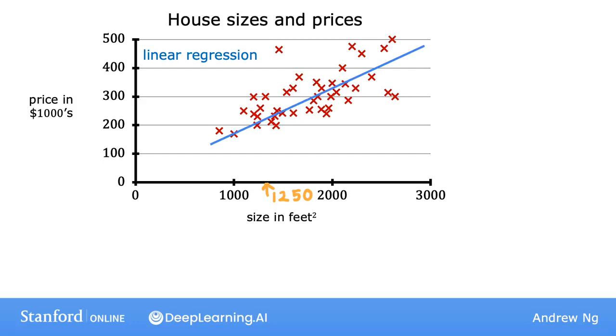And based on this straight line fit to the data, you can see that if a house is 1,250 square feet, it will intersect the best fit line over here. And if you trace that to the vertical axis on the left, you can see the price is maybe around here, say about $220,000.